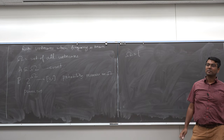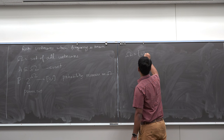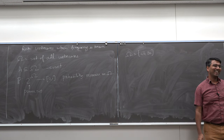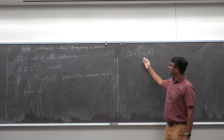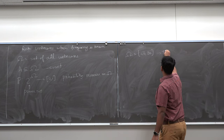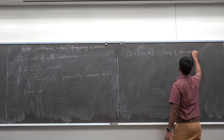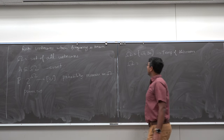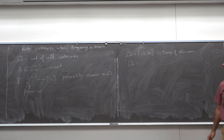A student suggested temperatures between 65 and 80 degrees — that's Omega for the temperature of this room. Now let's change the location. What's Omega for the temperature of Columbus? The set of all possible temperatures in the city of Columbus.